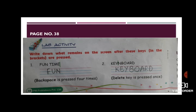Then there is a fun activity, one activity you already know, use of backspace key or delete key. So write down what remains on the screen after these keys in the brackets are pressed. Now some of the two keys are written in the brackets. There is one word, first one is fun time, and in the bracket it is written backspace is pressed four times.